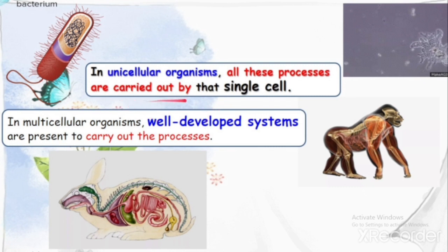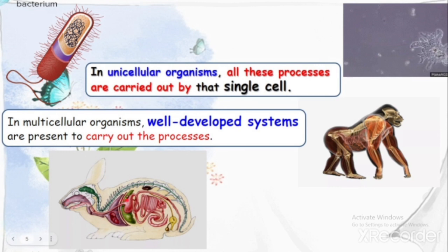In unicellular organisms like bacteria, all processes such as nutrition, excretion, and circulation are carried out by a single cell. In multicellular organisms, well-developed systems are present to carry out these processes — for example, the respiratory system for respiration, the digestive system for nutrition, and blood, blood vessels, and heart for circulation.